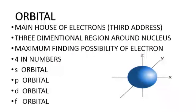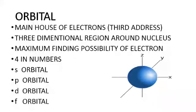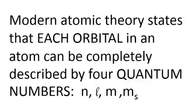Orbitals is the third and the main address for the electron. That is why I have written here that it is the main house for the electrons. It is basically the three-dimensional region along the x-axis, y-axis, and z-axis where the probability of finding the electron is maximum — here you can say with 100% surety that this is the main address where the electron will be found. Orbitals are four in numbers: s orbital, p orbital, d orbital, and f orbital. These four orbitals have further subdivisions.